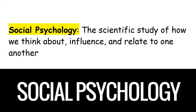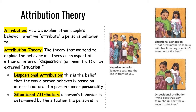Today we're looking at attribution theory and the fundamental attribution error. So what is attribution theory? Attribution is how we explain other people's behavior — what we attribute a person's behavior to. Attribution theory is the theory that we tend to explain the behavior of others as an aspect of either an internal disposition or an external situation.